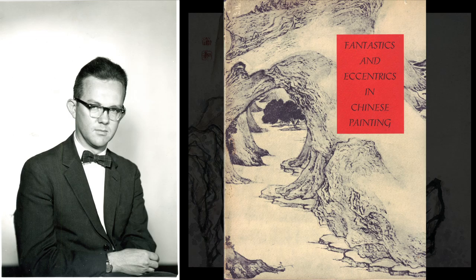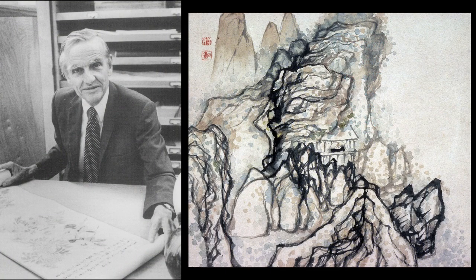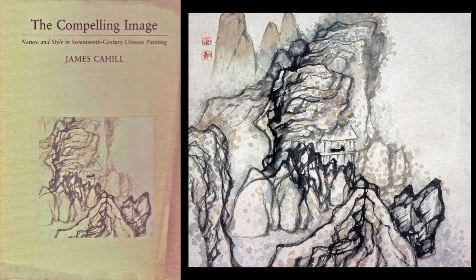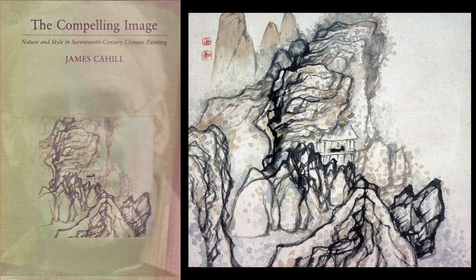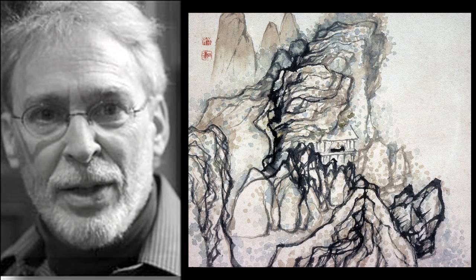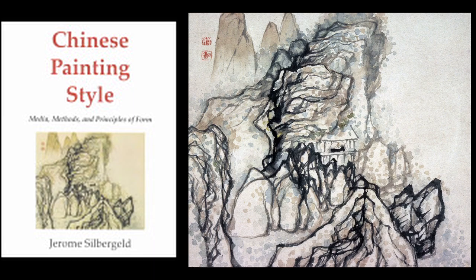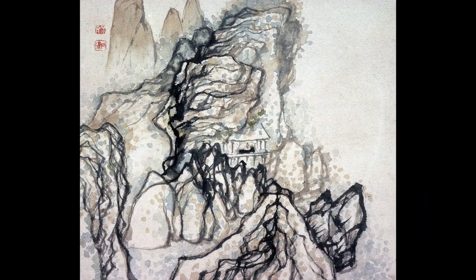I became a devotee of the album and discussed it, reproducing two leaves in the catalog of my 1967 exhibition Fantastics and Eccentrics in Chinese Painting. Dick Edwards, who organized the exhibition The Painting of Tao Ji at the University of Michigan in the same year, was understandably unhappy that I had already reserved two of Xiu Tao's greatest paintings for my show. In my Compelling Image, the Harvard lecture book published in 1982, I reproduced no less than seven leaves, with the famous one on the cover. Jerome Silbergeld put the same one on the cover of his 1985 book Chinese Painting Style. This has become everybody's favorite Xiu Tao album.